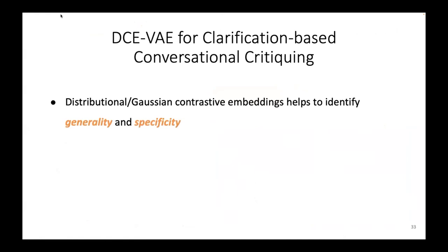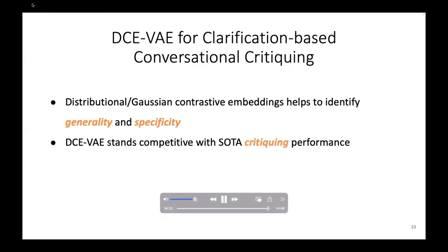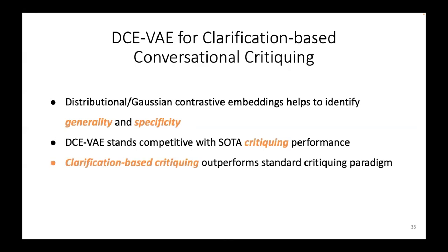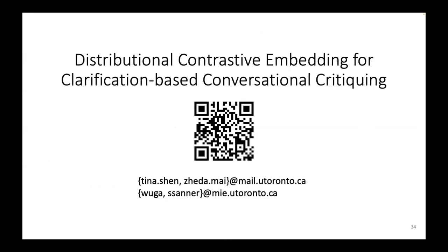To summarize: our model DCVAE is proposed for the novel concept of clarification-based conversational critiquing, making use of distributional Gaussian contrastive embeddings to help identify the generality and specificity of preference keyphrases. DCVAE has competitive critiquing performance, and for clarification-based critiquing, it outperforms the standard critiquing paradigm, with personalization improving conversational efficiency. That concludes this presentation; please feel free to contact us if you have any further questions.